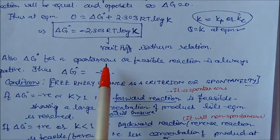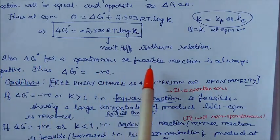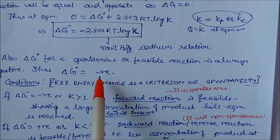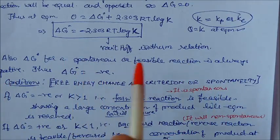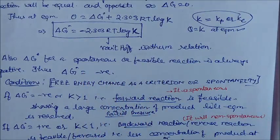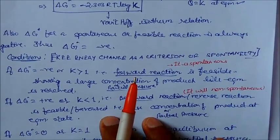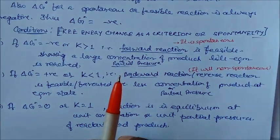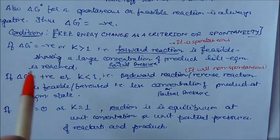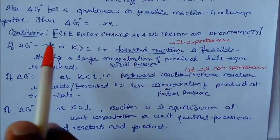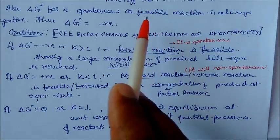For a spontaneous reaction, delta G° is always negative. If this value is negative, the reaction is feasible. If it is positive, the reaction will not be possible. Delta G° is the criterion for spontaneity — it decides whether or not the reaction is spontaneous.